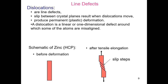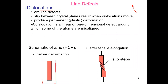We are talking about line defects. A line defect is called dislocation. The line defect is called dislocation. This is called line defect free materials.